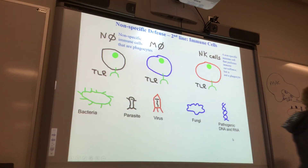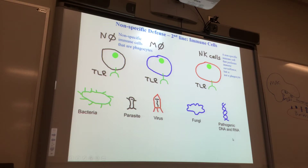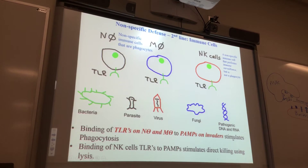These are non-specific immune cells. What are the two specific immune cells? B cells and T cells. Natural killer cells are non-specific — they perform immune surveillance, out there all the time like a police force surveilling your body with their toll-like receptors. If toll-like receptors find a PAMP, they're going to destroy that foreign cell. But a natural killer cell is not a phagocyte. When a PAMP binds a toll-like receptor, that stimulates phagocytosis.